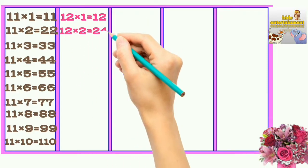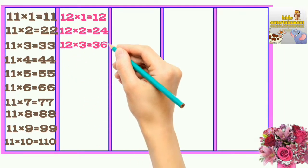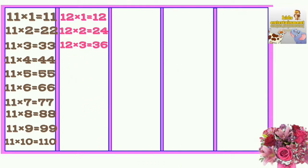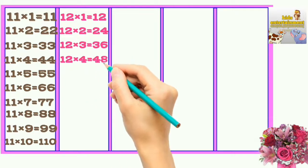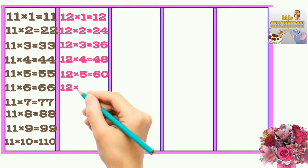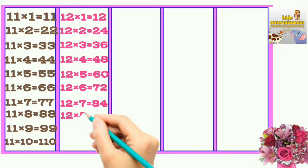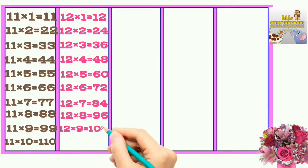12×2=24, 12×3=36, 12×4=48, 12×5=60, 12×6=72, 12×7=84, 12×8=96, 12×9=108, 12×10=120.